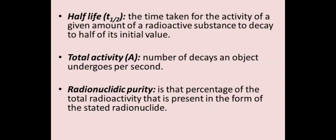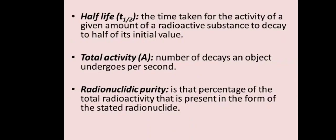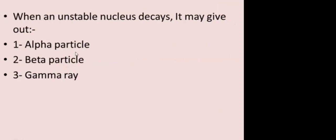The next related term is total activity — the number of decays an object undergoes per second. Then, radionuclidic purity — the percentage of the total radioactivity that is present in the form of the stated radionuclide. So these are terms related to radioactivity: radiation, radioactive decay, half-life, total activity, and radionuclidic purity.